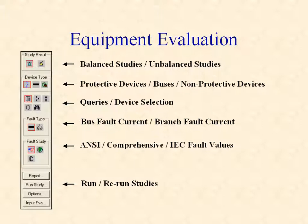Equipment evaluation can use the results from the PTW balanced system studies or from the unbalanced studies. You can view the evaluation of protective devices, equipment buses, or non-protective devices such as cables and transformers. You can further refine the list of components by device type or by selected query. For example, the query can be used to display only those components that fail the evaluation criteria. Equipment evaluation can use the maximum fault values at each equipment bus or the maximum current that flows through each branch. You can also use fault results from AFault, the Dapper Comprehensive Fault, or the IEC Fault Analysis Module.